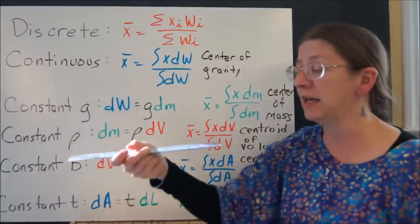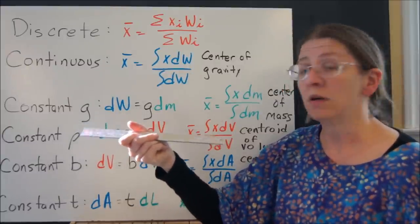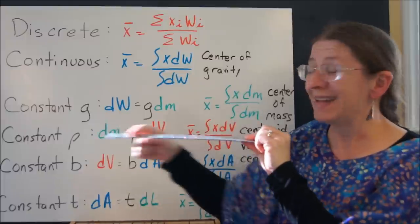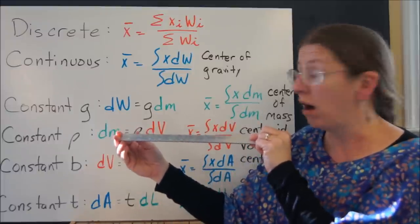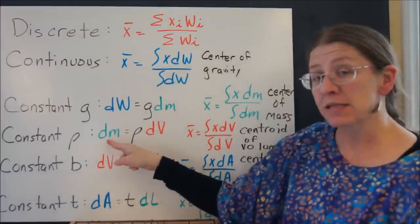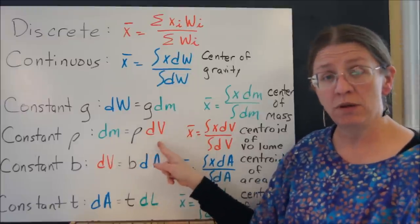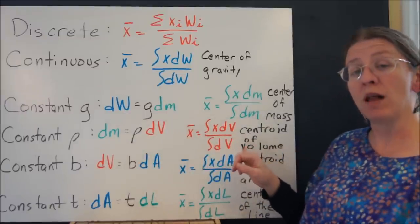The density of this ruler is the same all the way along. So my mass is a density times volume, but the densities will cancel out. That gives me a centroid of my volume.